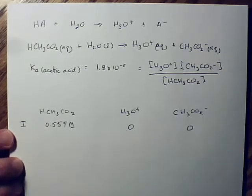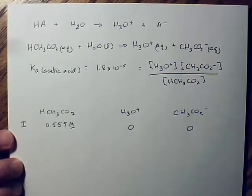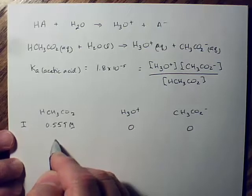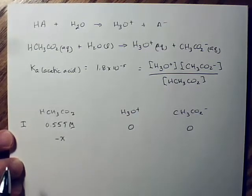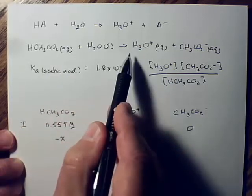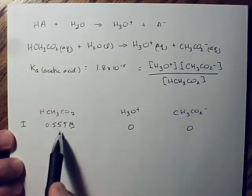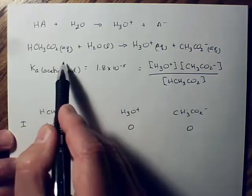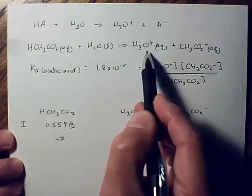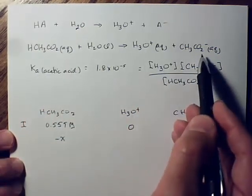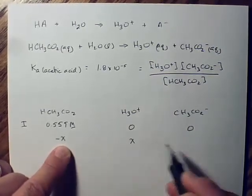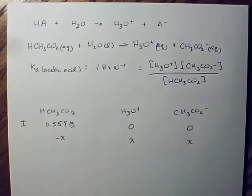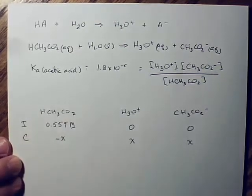Now, how much is going to change? I don't know. So, some amount of this stuff is going to go away. That make sense? The amount that this goes away is the same amount we get of this. Every mole of this breaks up, we get one of these and one of these. So, whatever amount of this goes away, that's the amount of these two things we get. C for change.